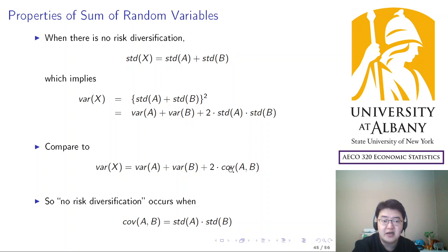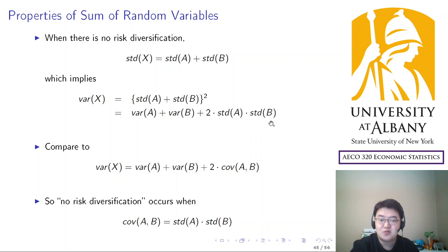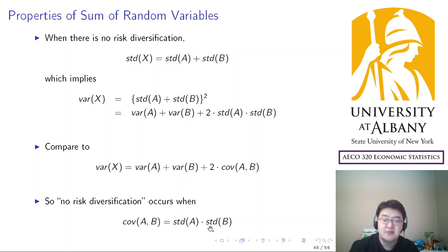Comparing the two expressions, if the equality holds — that SD(X) = SD(A) + SD(B) — that implies the covariance between A and B equals SD(A) times SD(B). This condition holds only under that specific circumstance. So this always holds in general, but the equality for standard deviations holds only when covariance equals SD(A) times SD(B). This is the condition under which no risk diversification occurs.